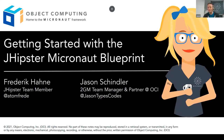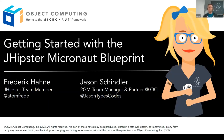Thank you, Jen. Welcome everybody, happy Friday. I'm Jason Schindler, 2GM team manager here at OCI and a partner. Today we're going to talk about getting started with the JHipster Micronaut Blueprint. We'll give you an introduction to JHipster, an introduction to Micronaut, what blueprints are within JHipster and how they enable extending the core functionality, and we'll also do a couple of demos on how to get started with different kinds of applications.